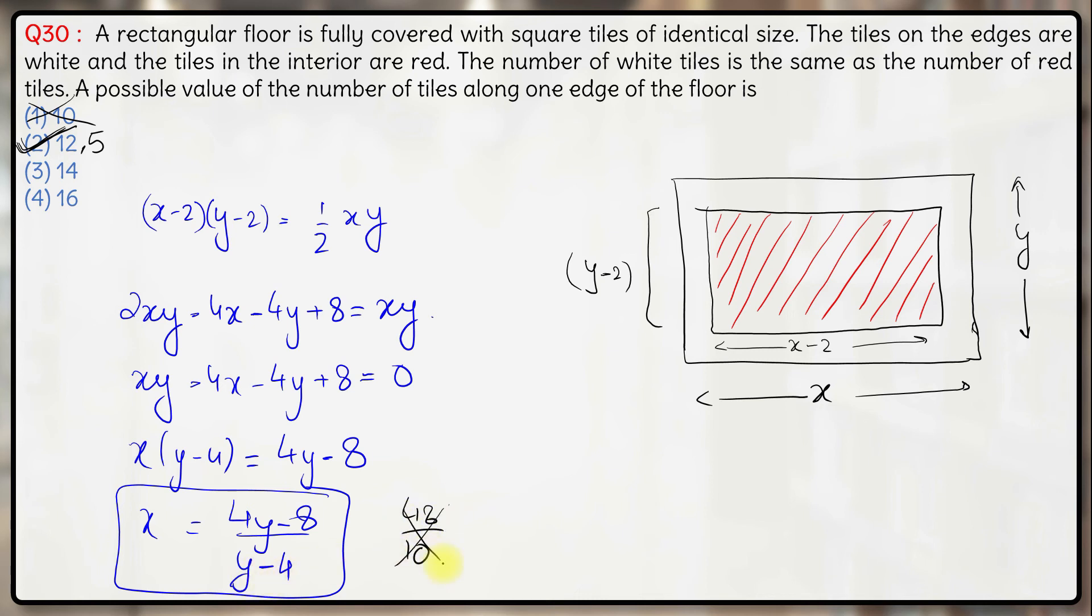And if you consider the last option 16, 4 into 16 is 64, 64 minus 8 is 56 divided by 12, again not an integer.